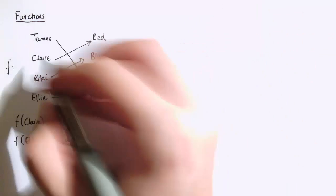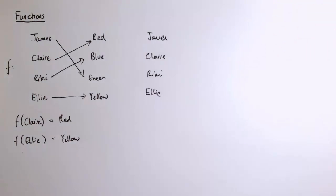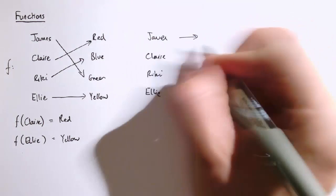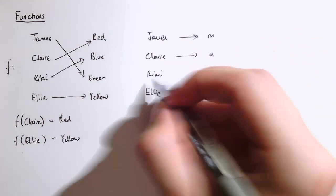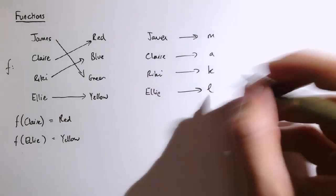It's saying f which is the favorite colour of Ellie is yellow. Another example of a function might be to take those same people and map them to the third letter in their name. So James would become m, Claire would be a, Ricky would be k and Ellie would be l.